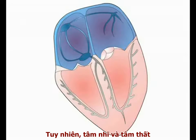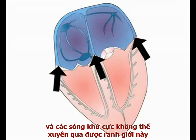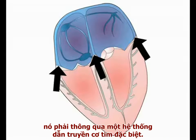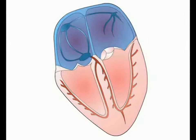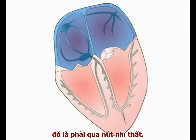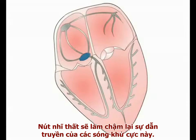The atria and ventricles, however, are separated by a non-conducting fibrous septum. The depolarisation wave cannot penetrate this barrier, and in order to activate ventricular contraction, the wave must be transmitted into the ventricles by the specialised cardiac conducting system. In a normal heart, the only route by which the depolarising wave can enter the ventricular conducting system is through the AV node. In order to allow the ventricles to fill with blood following atrial contraction, the AV node initially delays the spread of the depolarisation wave.